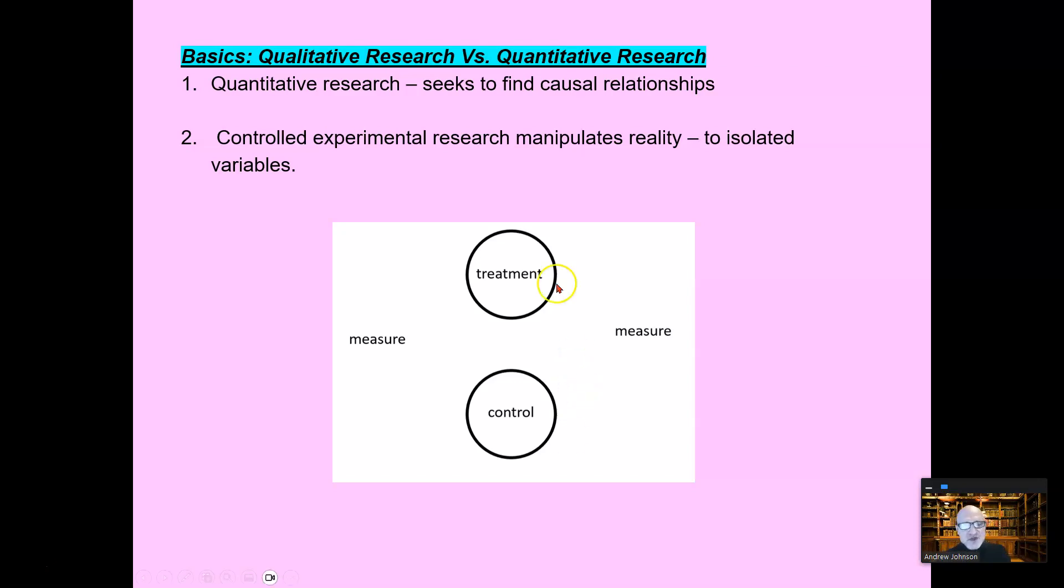So this controlled experimental research using groups, you want to isolate all the variables except one. In the case of reading, it's often phonics instruction or something else. So you can say, they were the same except for the type of instruction given. So it's the type of instruction that caused the difference. And of course, you always want to look at the groups. That's why it's important to have a peer review so you can look to see if the groups were equal to start out with.